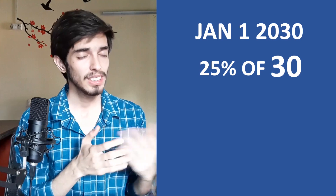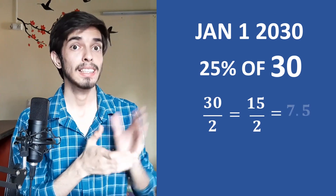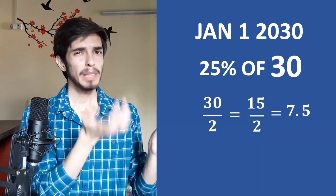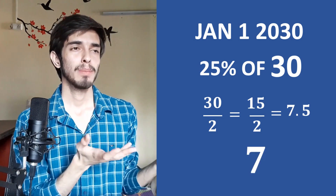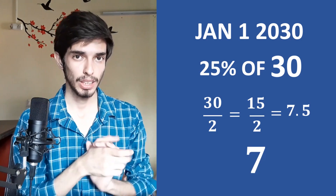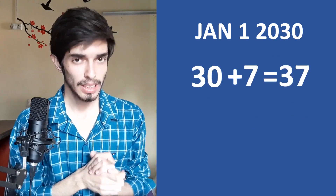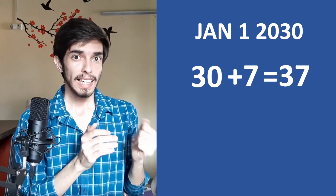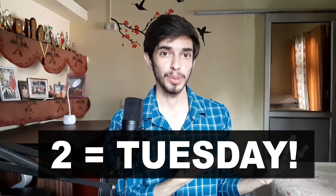Calculate 25% of 30: half of 30 is 15 (which is 50%), and half of 15 is 7.5. Keep the change — don't include the decimal — so we have a $7 tip. Our bill is basically 30 plus 7, which is $37. Since there are 7 days in a week, divide by 7: 7×5 is 35, and we have a remainder of 2. This 2 is the code associated with the day of the week, and 2 is Tuesday. So January 1, 2030 will be a Tuesday.